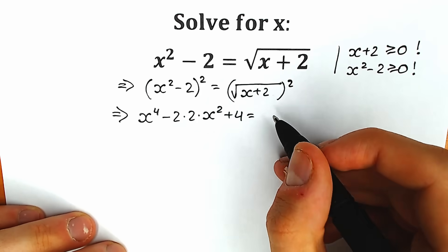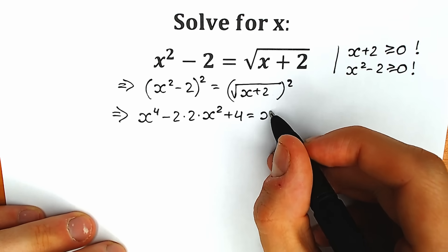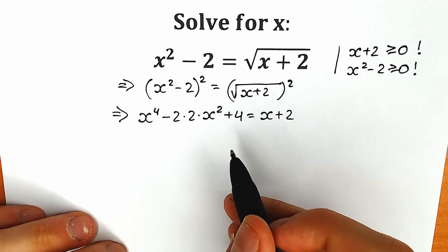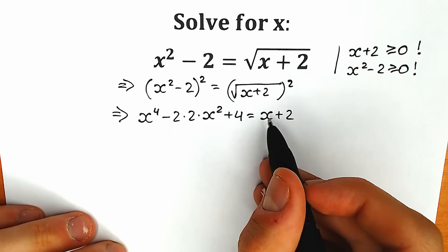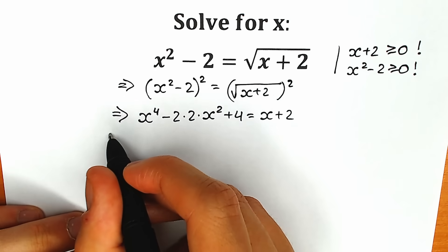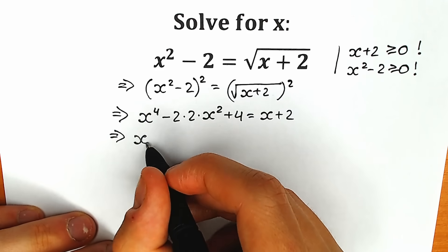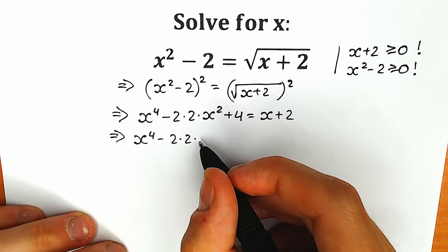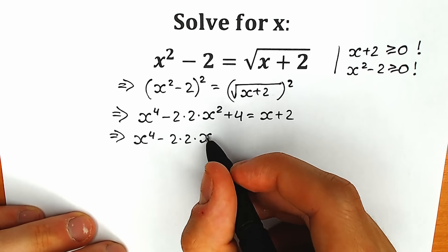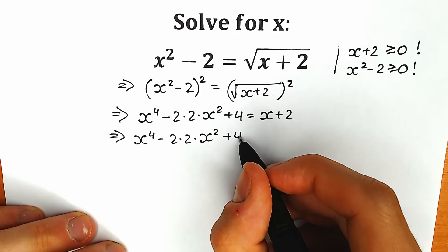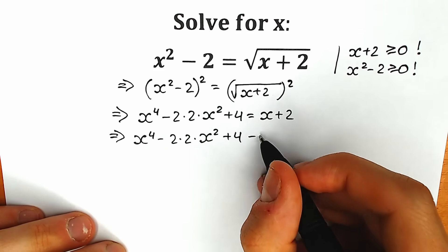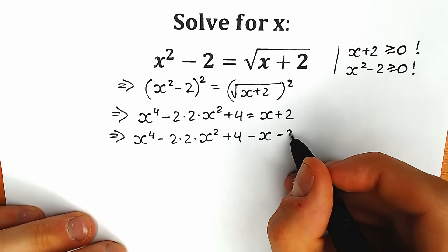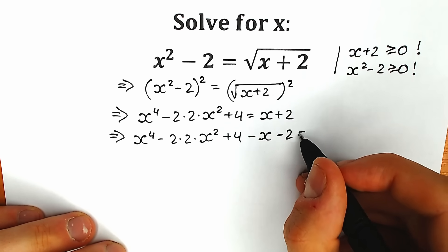Now let's move everything to the left side by subtracting the right side expression. As a result we have x to the power 4 minus 2 times 2 times x², plus 4, plus 4, minus x, minus 2, equal to zero.